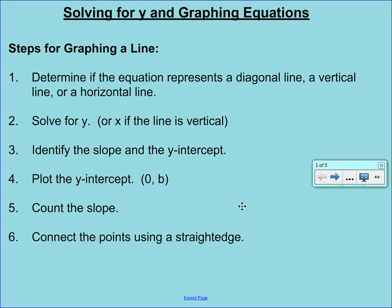If you notice, there are six steps on your screen right now. Doing these in order is very important because the first one says that we want to determine if the equation represents a diagonal line, a vertical line, or a horizontal line.